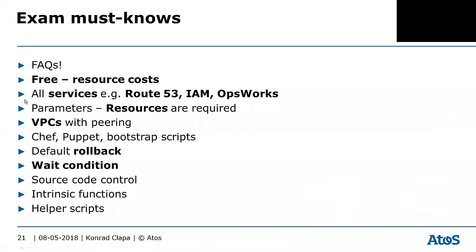Make yourself familiar with the supported services — note down the most important ones. Remember which parameters are required — the Resources attribute is the only required one. Remember you can provision VPC with peering, integrate with Chef and Puppet, and use bootstrap scripts.